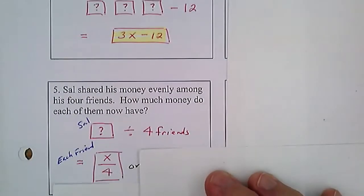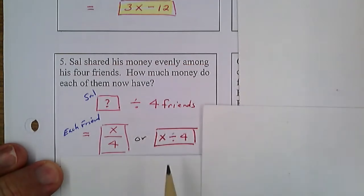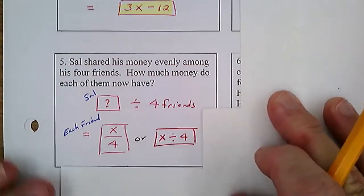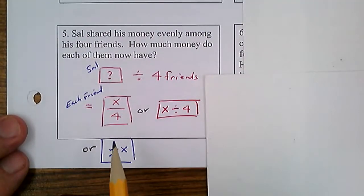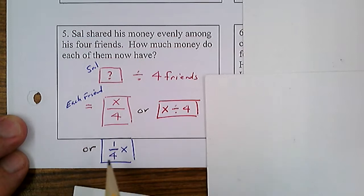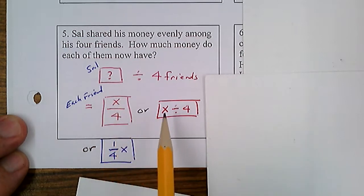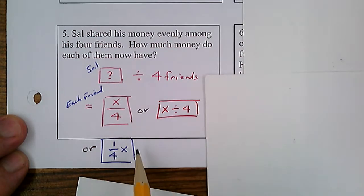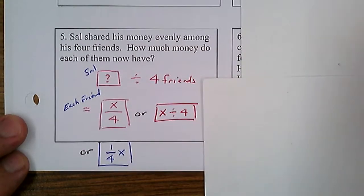So we could write it like this: this is Sal's money divided by four. Or we could write it the more elementary way: Sal's money divided by four. There's one other way — you could write it as one-fourth of all the money. Each of them is going to get one-fourth of Sal's money. So: his amount of money divided by four, or one-fourth x. Those were one, three, and five — you need to do two, four, and six.